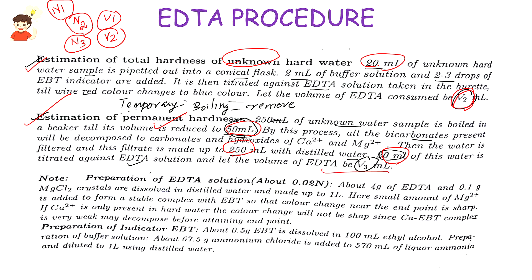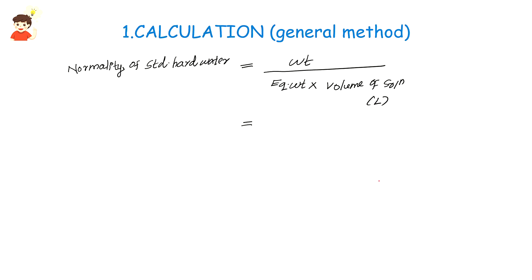We use the burette and EDTA. In this stage, we are going to use normality. Unknown hard water — permanent. We use EDTA. This is the general method — we are going to explain how EDTA is used as the general method.